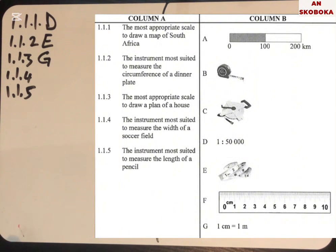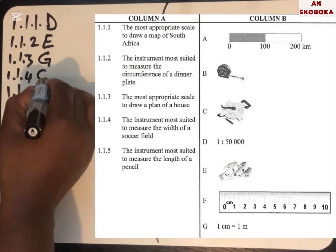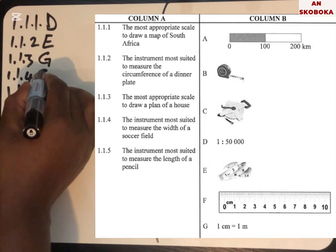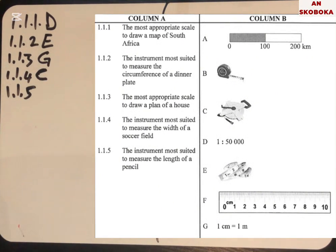Question four asks for the instrument most suited to measure the width of a soccer field. The answer is C. That is the material we use when measuring a soccer field because it is very long — you can pull it up to 100 meters.